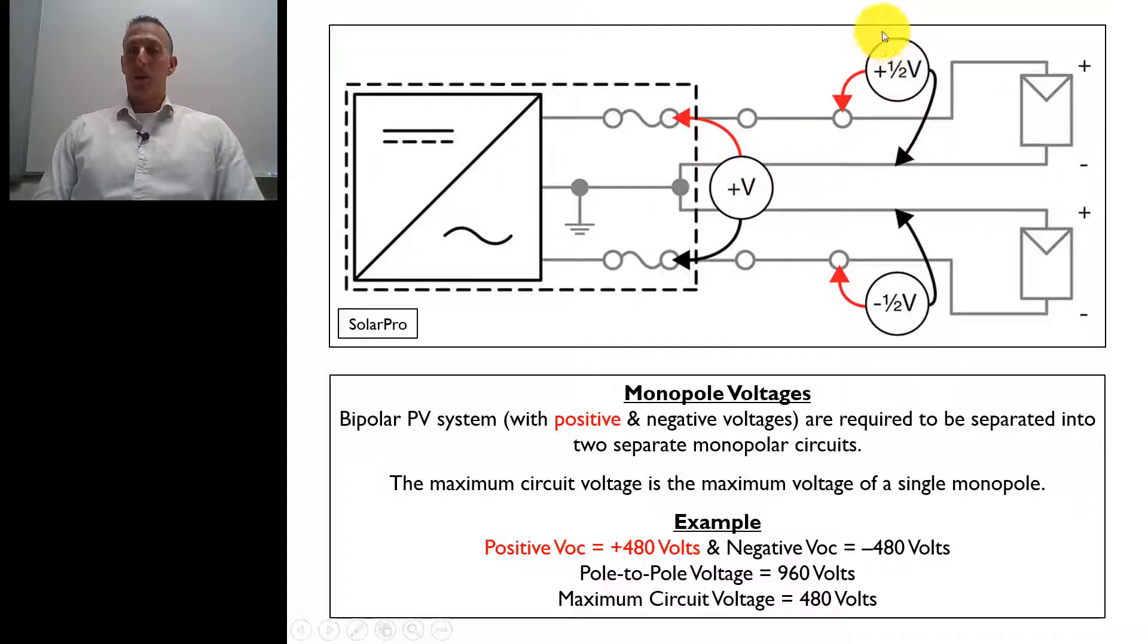This is the positive side because the positive is ungrounded right here. That's the positive side of that system. And then this is the negative side because the negative is the one that's ungrounded.